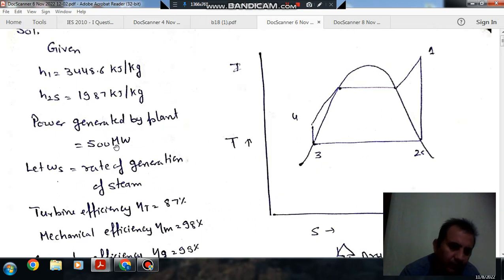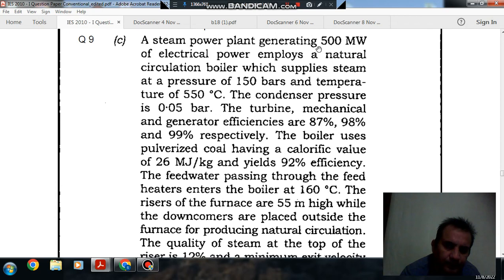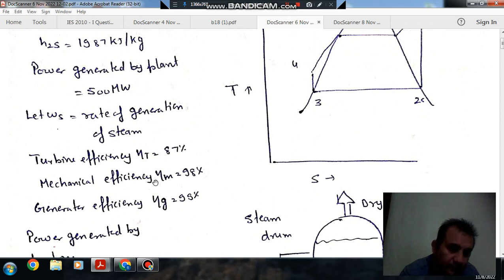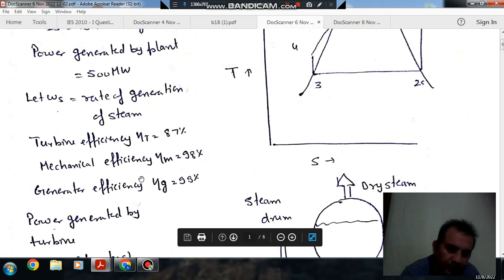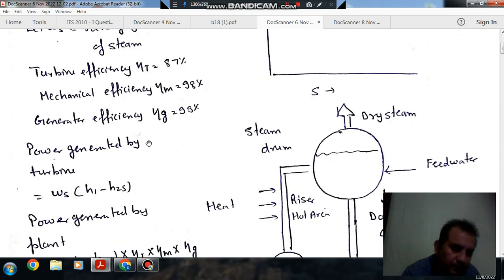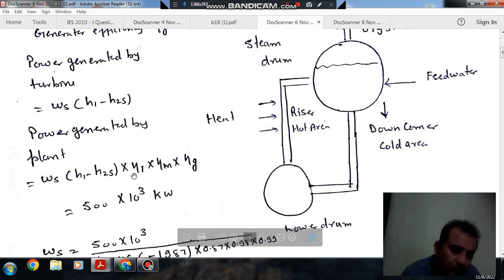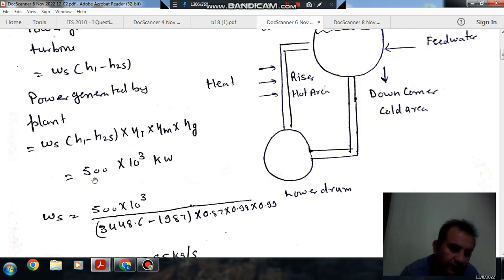And power generated by the plant is given, that is 500 megawatt. And let omega S be the rate of generation of steam. And turbine efficiency, mechanical efficiency and generator efficiency are given. So now, power generated by turbine is omega S into H1 minus H2S. So it is power generated by turbine. And power delivered by the plant will multiply the efficiencies.